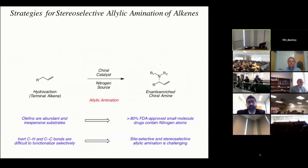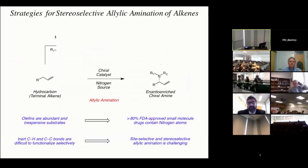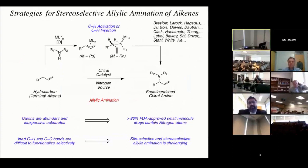The other reason why our field has been interested in this reaction is more conceptual. You're trying to take a molecule that contains only inert C-H and C-C bonds, and you're trying to selectively insert a nitrogen atom, both site-selectively and stereoselectively. When most of us think about strategies for stereoselective allylic amination, we think of really beautiful work done by many labs — strategies that involve C-H activation and C-H insertion chemistry.